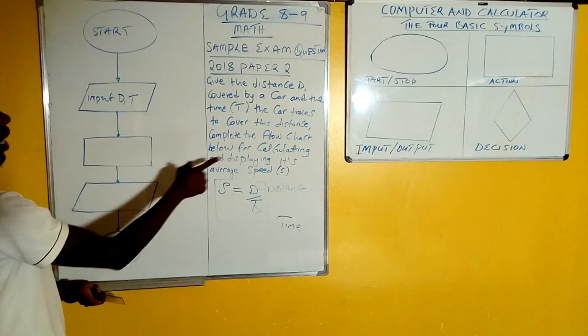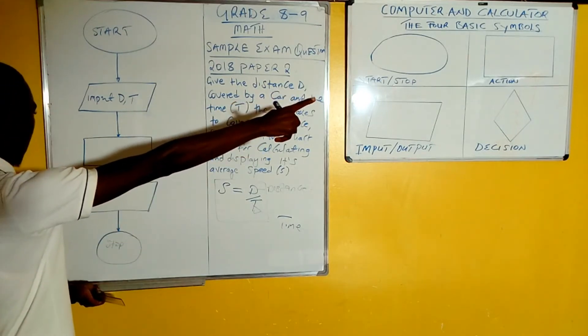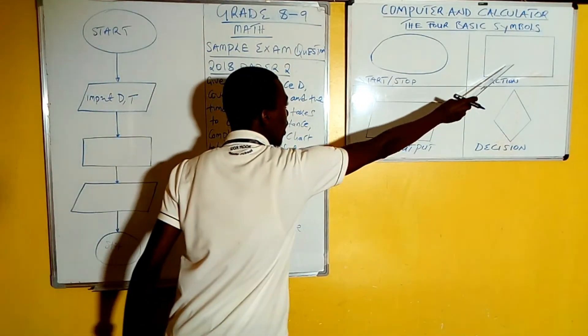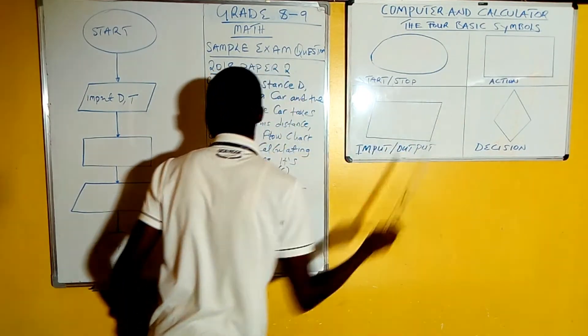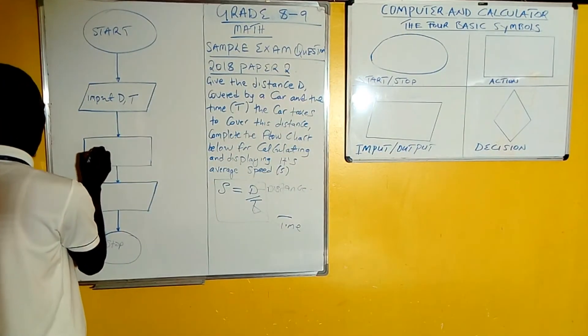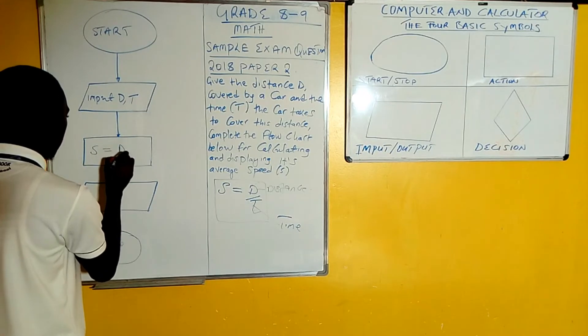This is the action box, as you can see here. In the action box, we simply put a formula. So you are going to write: speed equals distance over time.